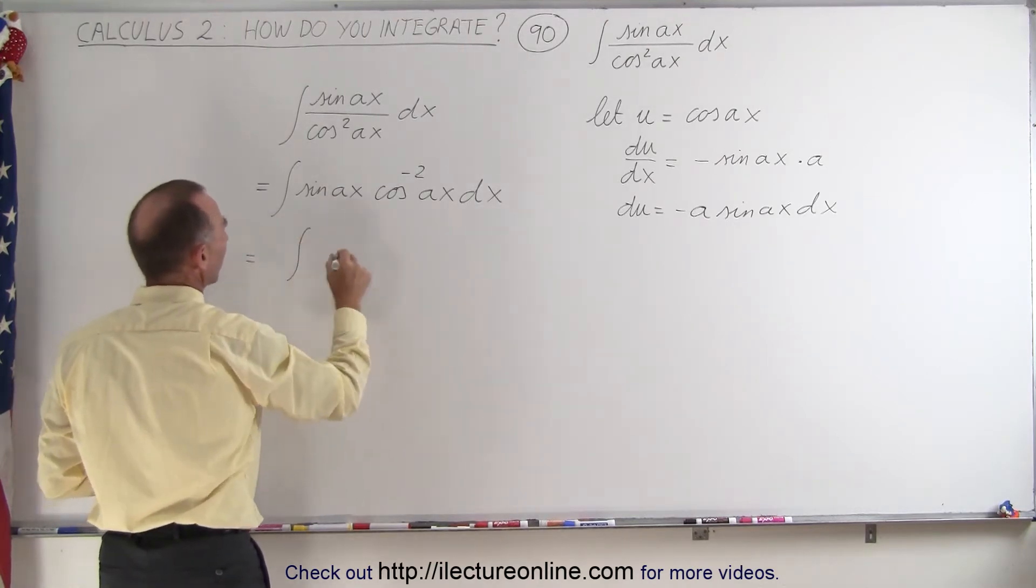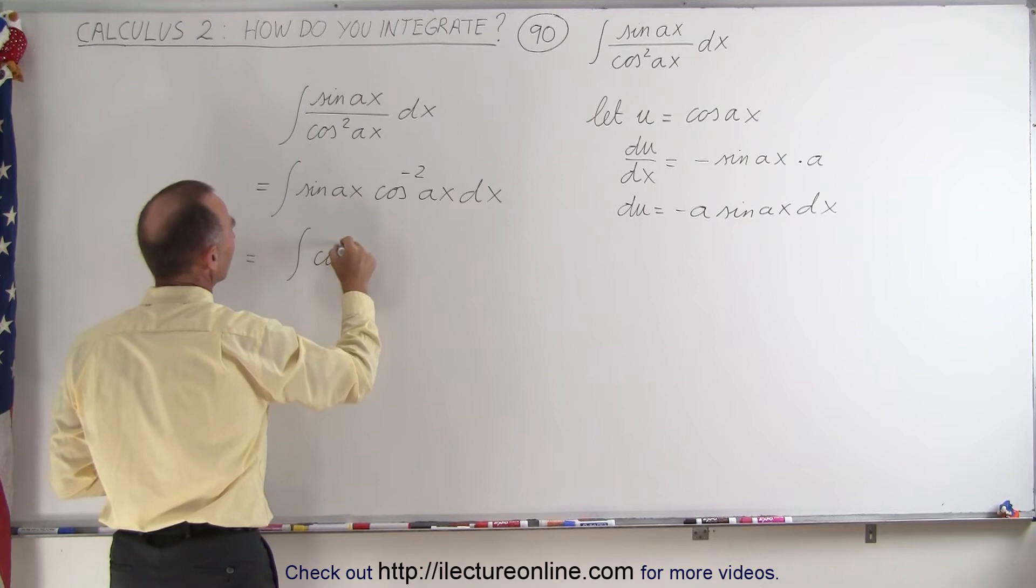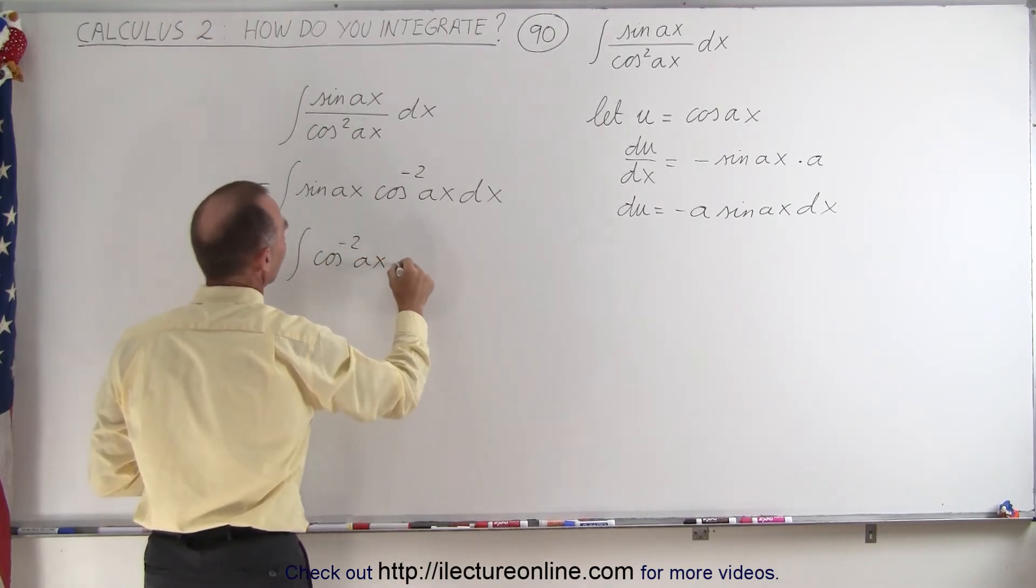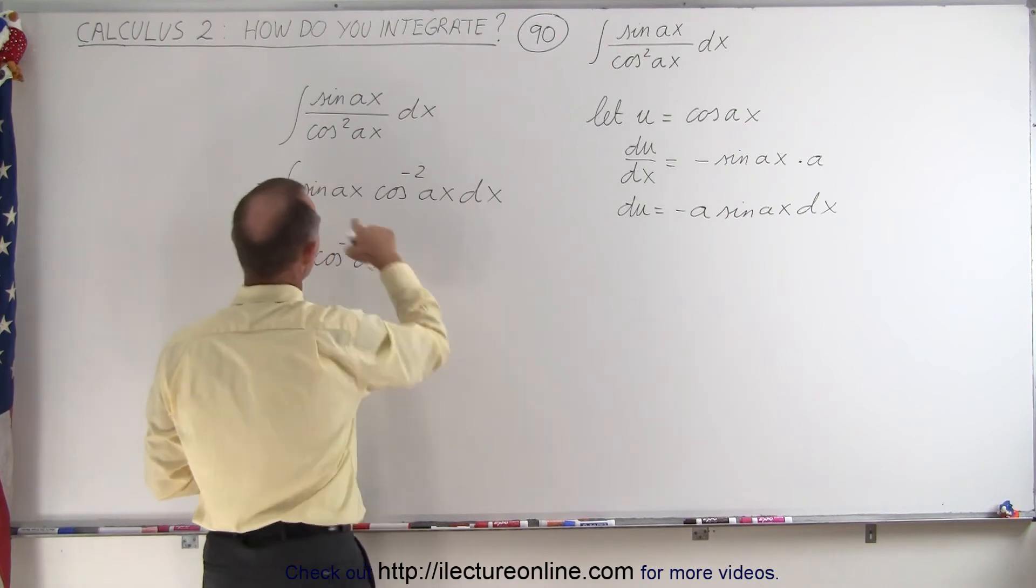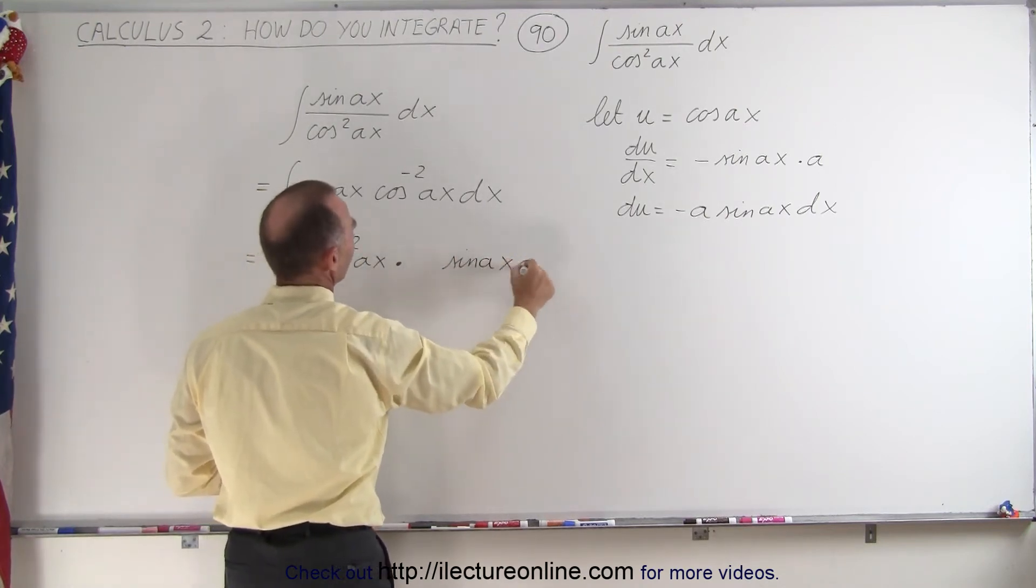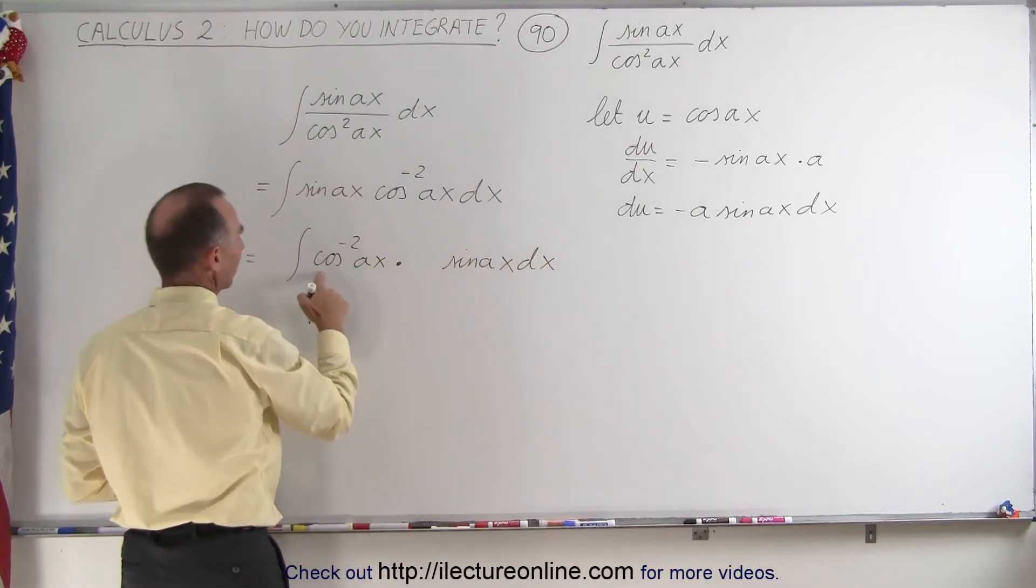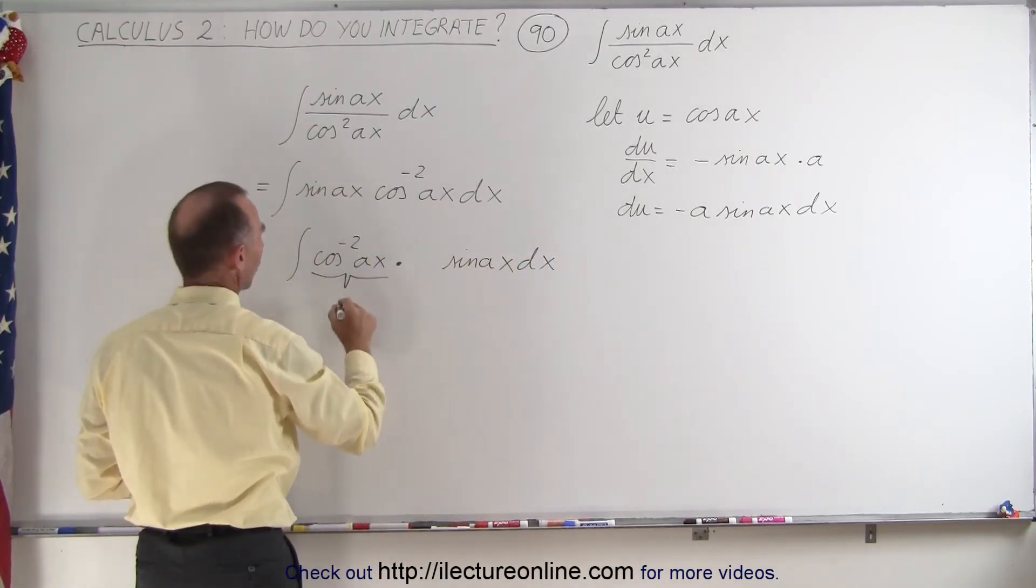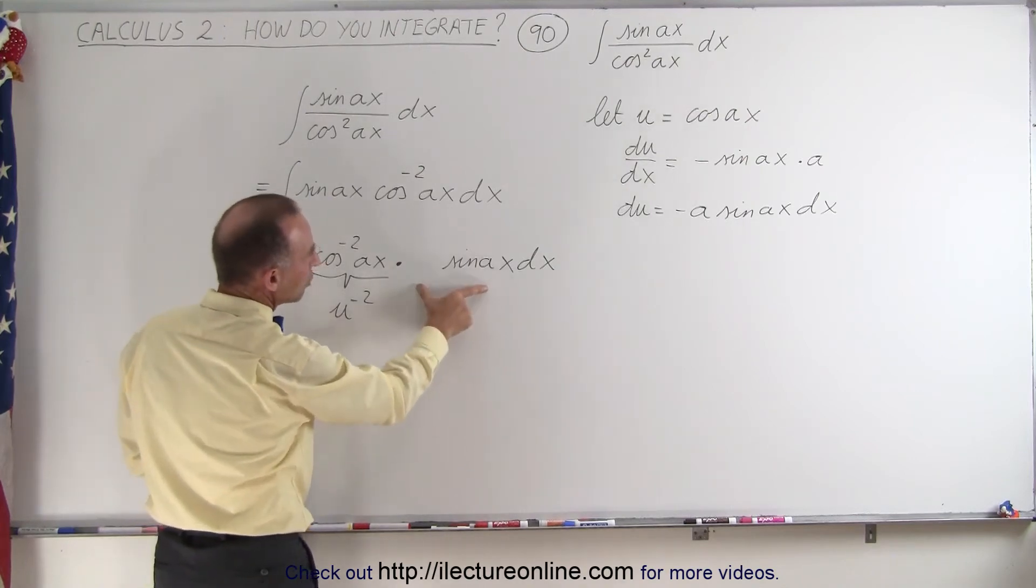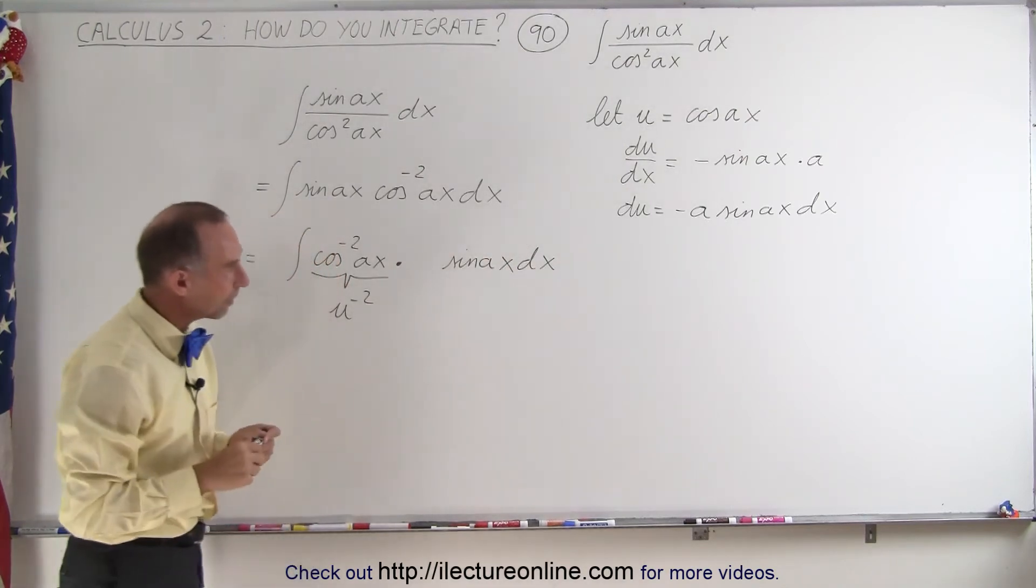This is equal to the integral of the cosine to the negative two power of Ax times, and we're going to leave a little bit of room, the sine of Ax dx. So here we have what we would call u to the minus two power. But we don't have a du because what we're missing here is a minus a.